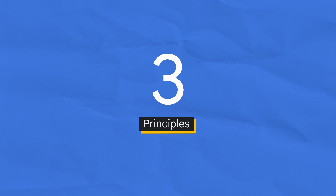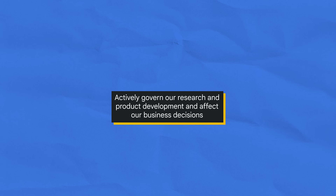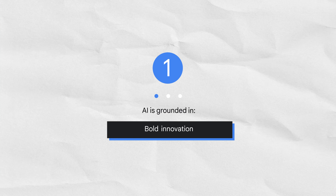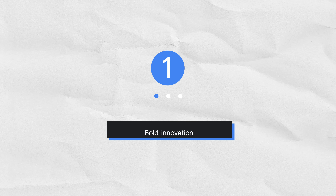We have three AI principles that guide our work — concrete standards that actively govern our research and product development and affect our business decisions. The first is bold innovation: we develop AI that assists, empowers, and inspires people in almost every field of human endeavor, drives economic progress, improves lives, enables scientific breakthroughs, and helps address humanity's biggest challenges.